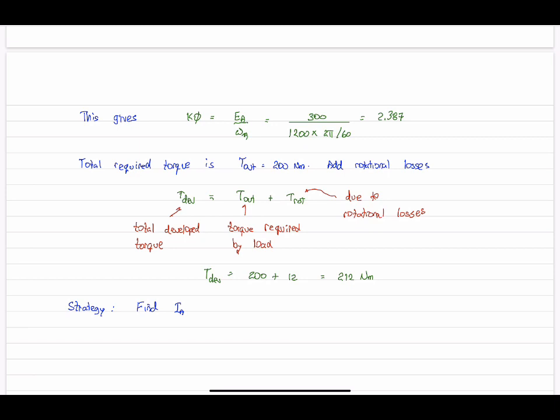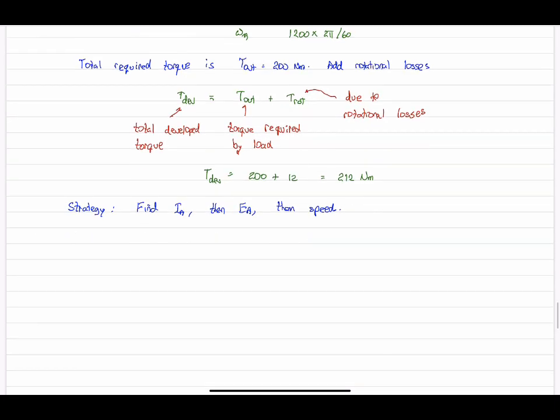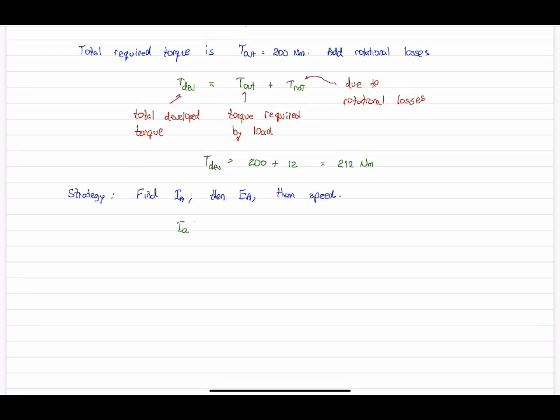So why don't we find IA first? We already know what the developed torque is, 212 newton meters, and we know the machine constant. So let's use the numbers we have. And we end up with 212 newton meters divided by the machine constant, 88.8 amps of current.